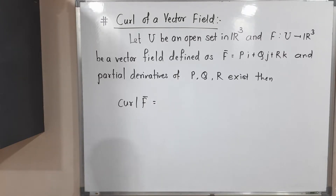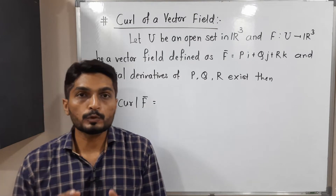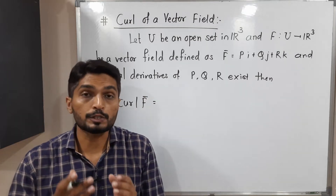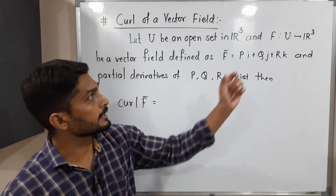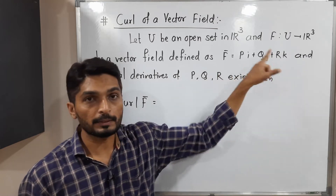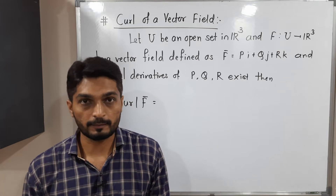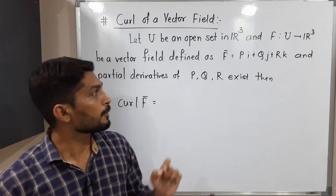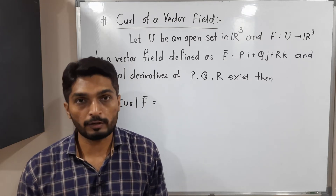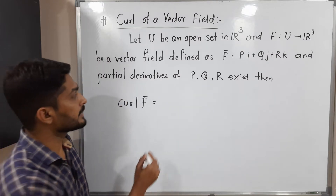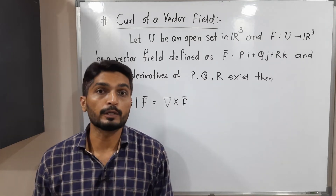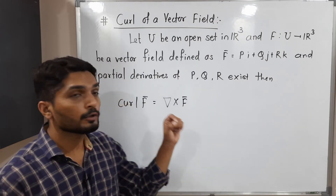Let us discuss the concept of curl of a vector field. Suppose we have a vector field F from R³ to R³, or defined on an open set U in R³, defined as Pi + Qj + Rk where P, Q, R are functions of x, y, z. If all partial derivatives of P, Q, R with respect to x, y, z exist, we can find the curl of F. Curl of F-bar is defined as del cross F-bar. You remember divergence of F-bar — we already saw that divergence is del dot F-bar, and curl is del cross F-bar.